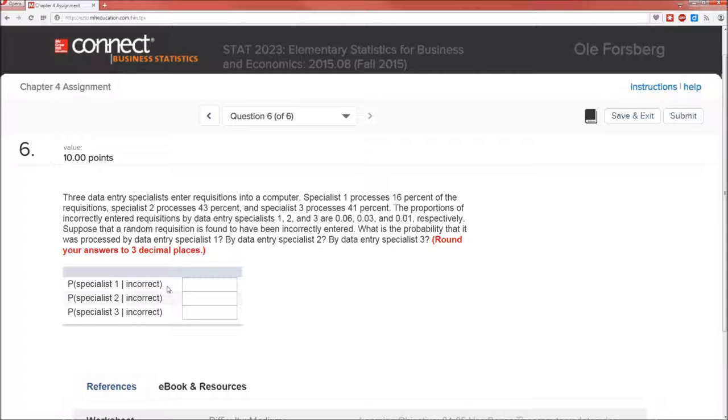Some call them flipped probabilities or inverted probabilities. And what Bayes' law does is it allows us to flip or invert those probabilities. Now suppose that a random requisition is found to have been incorrectly entered. What's the probability that it was processed by data specialist 1, 2, and 3.